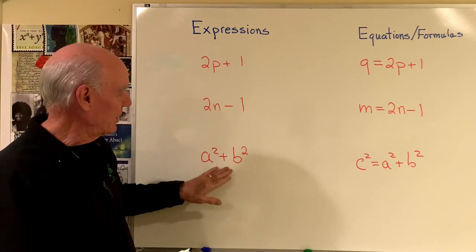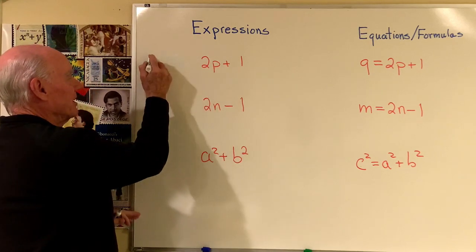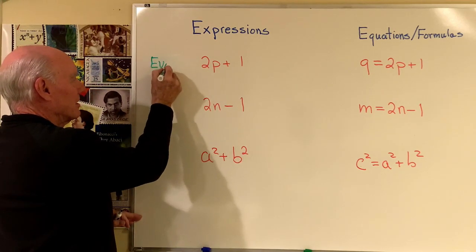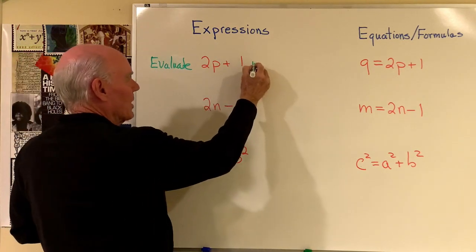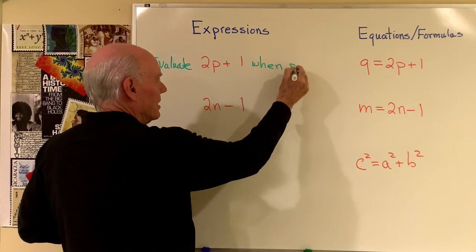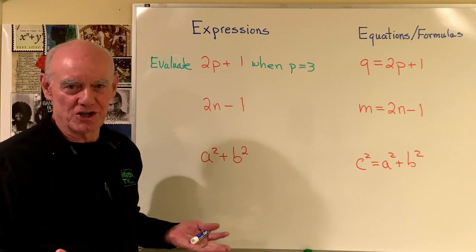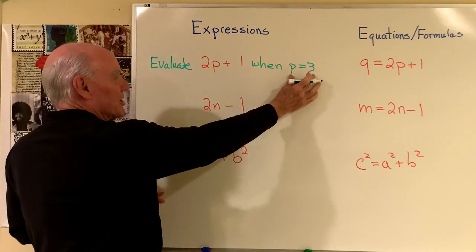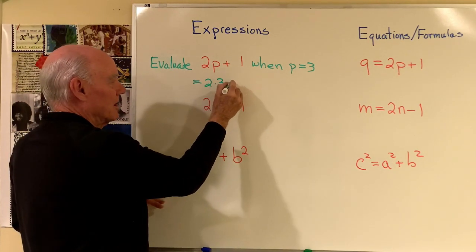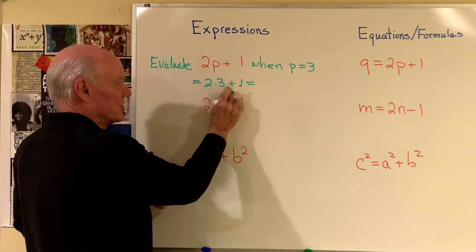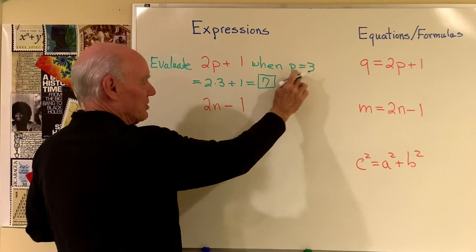I want to point out what kind of problems you can expect to see with these. With this right here, we could say evaluate this expression when P is equal to 3. So that means I'm going to take P equal 3, substitute it in here, and get 2 times 3 plus 1, which is 6 plus 1, or 7. So when I evaluate this expression when P is equal to 3, I get 7.